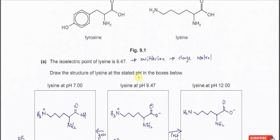Part A. The isoelectric point of lysine is 9.47. The isoelectric point is the pH at which the amino acid forms the zwitterion — the dipolar ion — meaning it has an ammonium group and a carboxylate group, but is still an overall charge-neutral species.